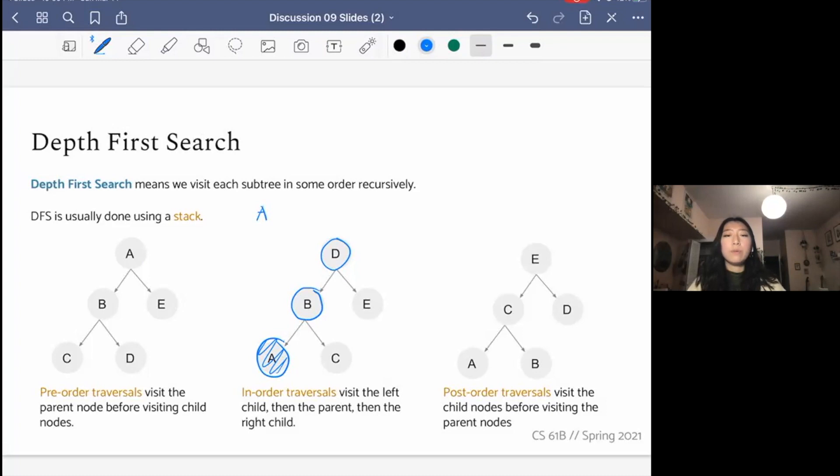And then we would say, we visited me. Now we can visit my right child. Well, A doesn't have one. So we're all done with A. Now we can move back up to B. Have we finished visiting B's left child? Yes, we have. And so now we can visit B. Then we can visit the right child. And so we go visit C. And C has children. So we keep going. Now we've finished evaluating all of D's left child. And so we can visit D. And then finally, we visit the right child E.